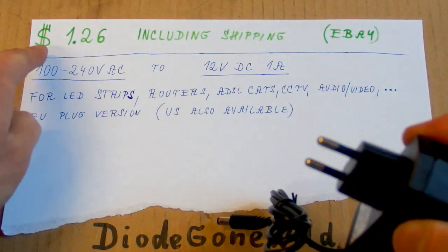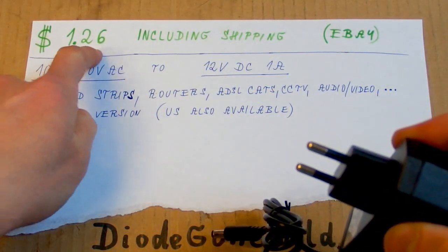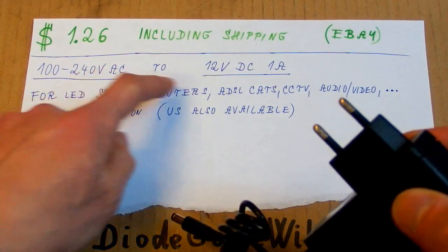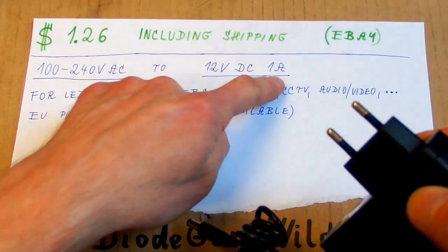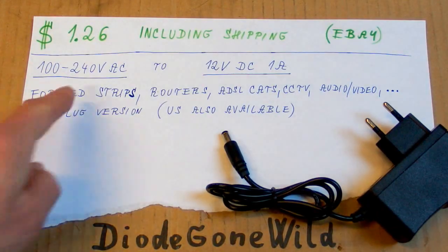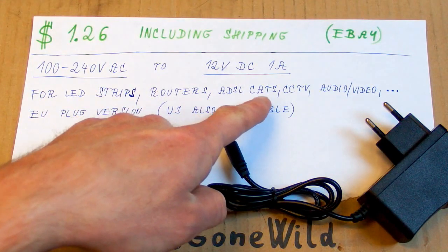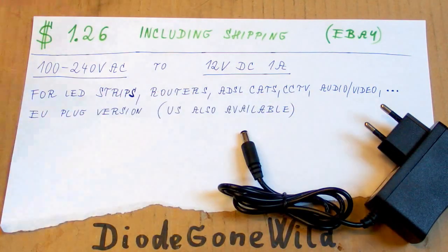It comes from eBay. It cost me only about $1.26 including shipping and it's for universal mains and the output is 12 volts, 1 amp. The listing says it's for LED strips, routers, ADSL cats, CCTV, audio, video and so on.